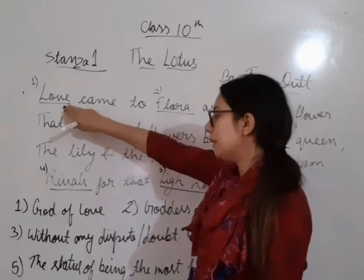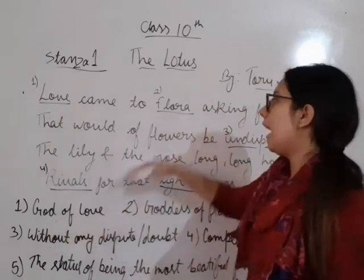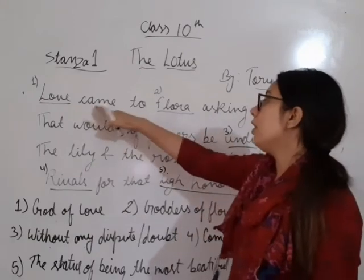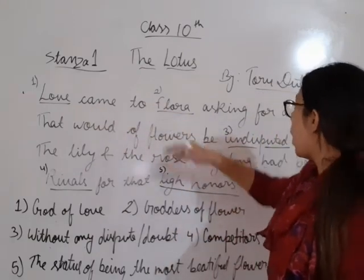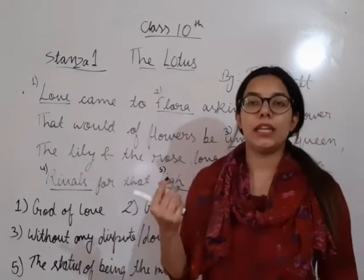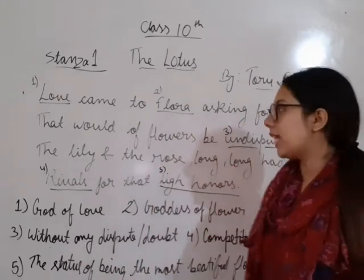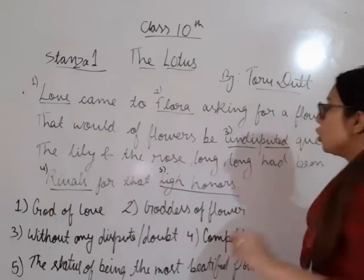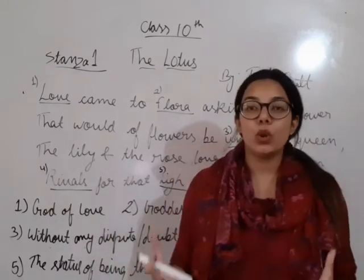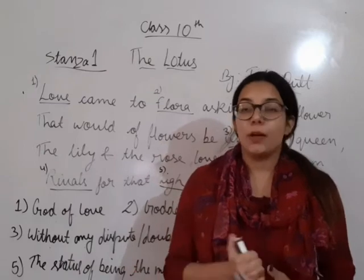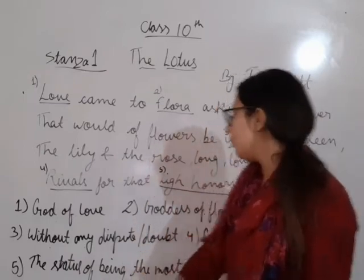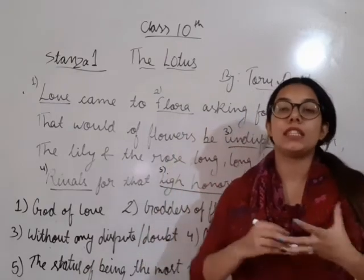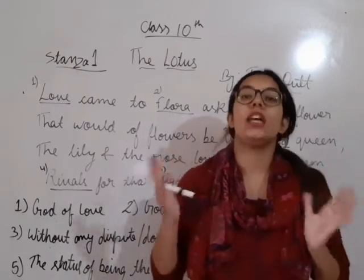Here, Love means the god of love and Flora means the goddess of flowers. Love comes to Flora asking for a flower — 'that would of flowers be undisputed queen' — meaning the flower that would be the queen of all flowers, undisputed, without any dispute, without any doubt, without any conflict.